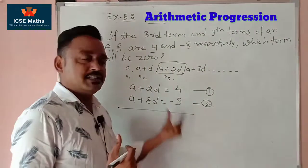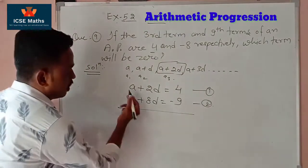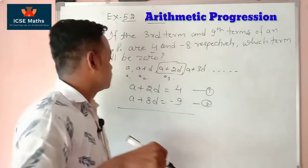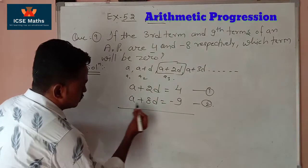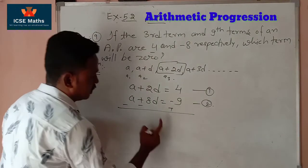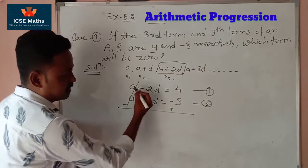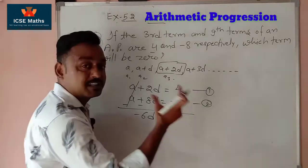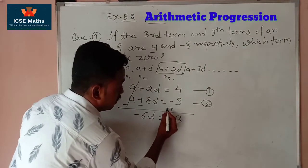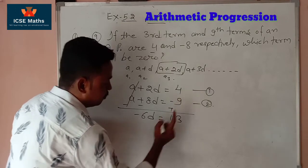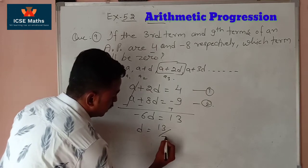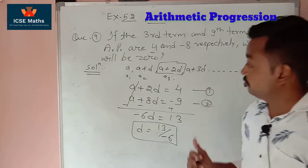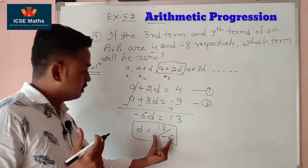To solve the two equations using the elimination method, we change the sign of equation 1 — plus becomes minus, minus becomes plus. After cancellation, the 'a' terms cancel. We are left with minus 6d equals 13, because minus 8 plus 4 gives minus 4... and the larger number 9 carries the plus sign. So d equals 13 divided by minus 6, that is d = -13/6.